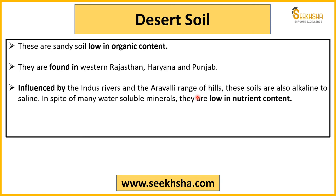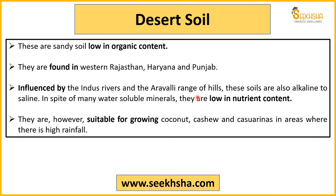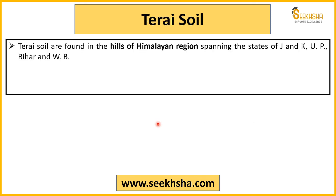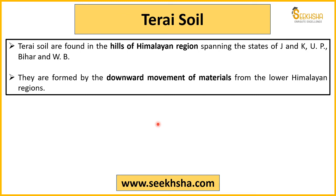Desert soils contain a lot of water-soluble minerals, and their useful nutrient content is very low. Crops like coconut and cashew can be grown in certain soil types. Mountain or forest soils are mainly found in the Himalayan region — J&K, UP, Bihar, West Bengal, and other Himalayan states where the Himalayas pass through. These are basically the lower Himalayan soils, formed from the material of downward movement from the mountains.